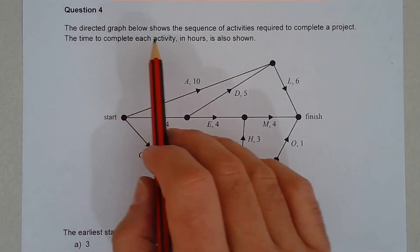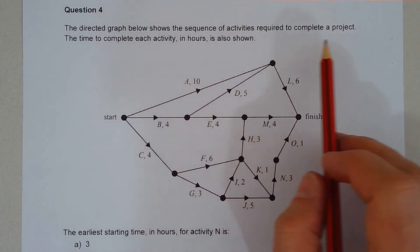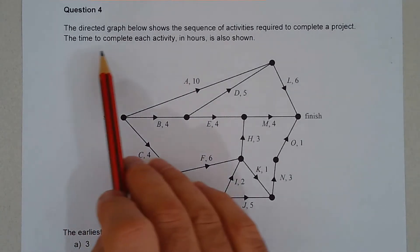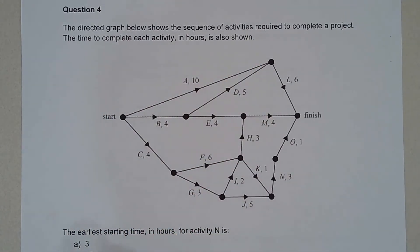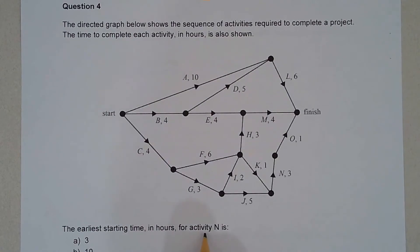The directed graph below shows the sequence of activities required to complete a project. The time to complete each activity in hours is also shown. The earliest starting time in hours for activity N is,